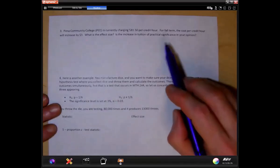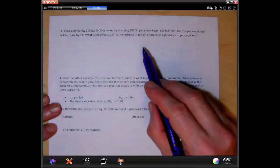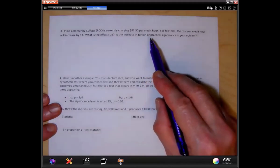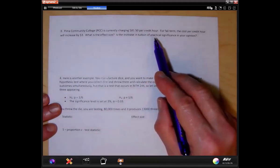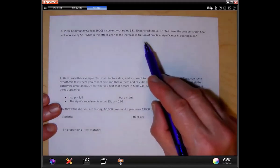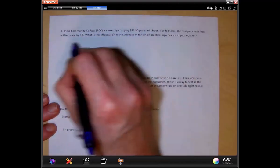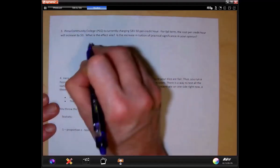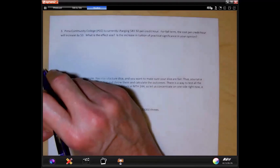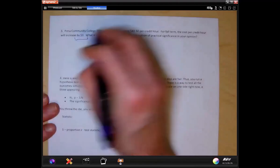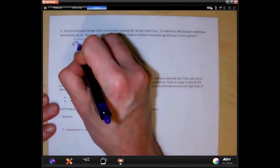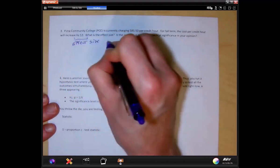Here's another example. Pima Community College is currently charging $81.50 per credit hour for fall term. The cost per credit hour will increase by $3. What is the effect size? The effect size is going to be the difference between the two realities: what it's charging now and what it will charge in the future. So the effect size is $3.